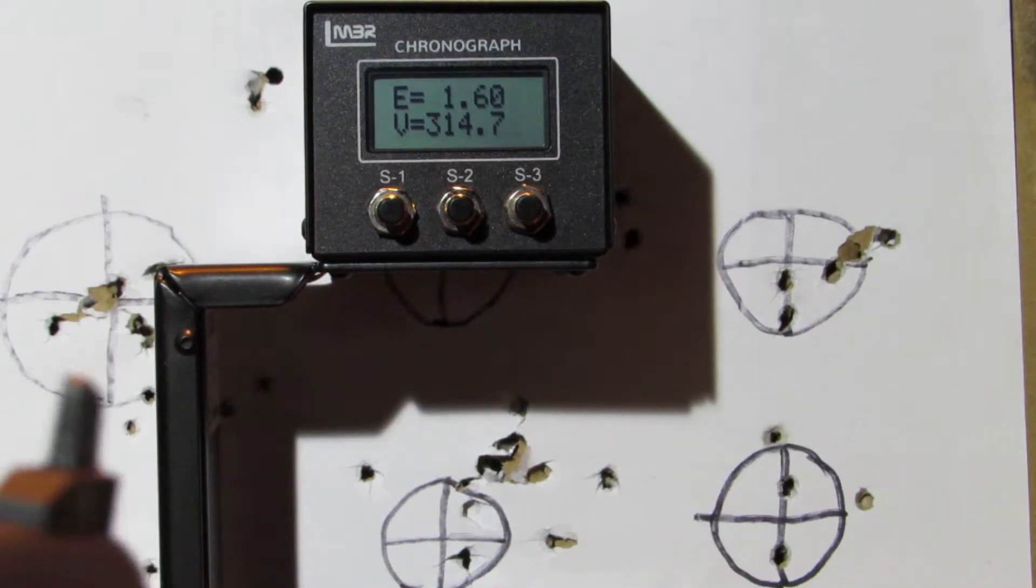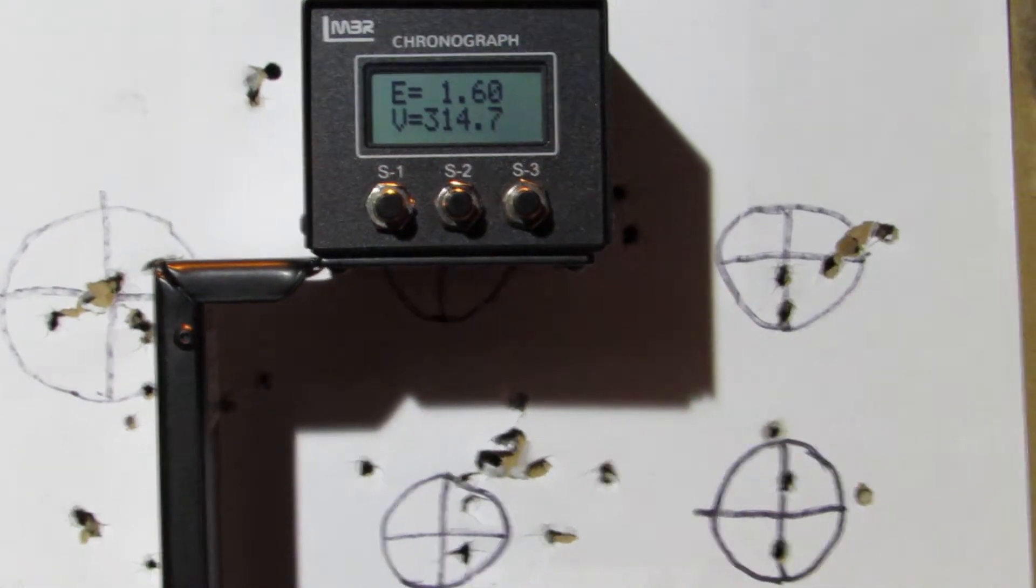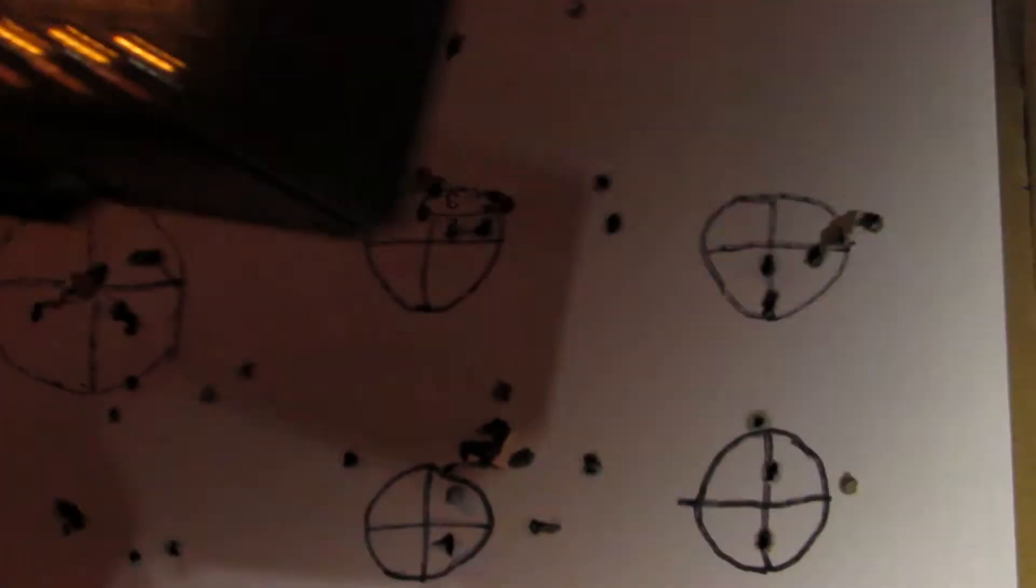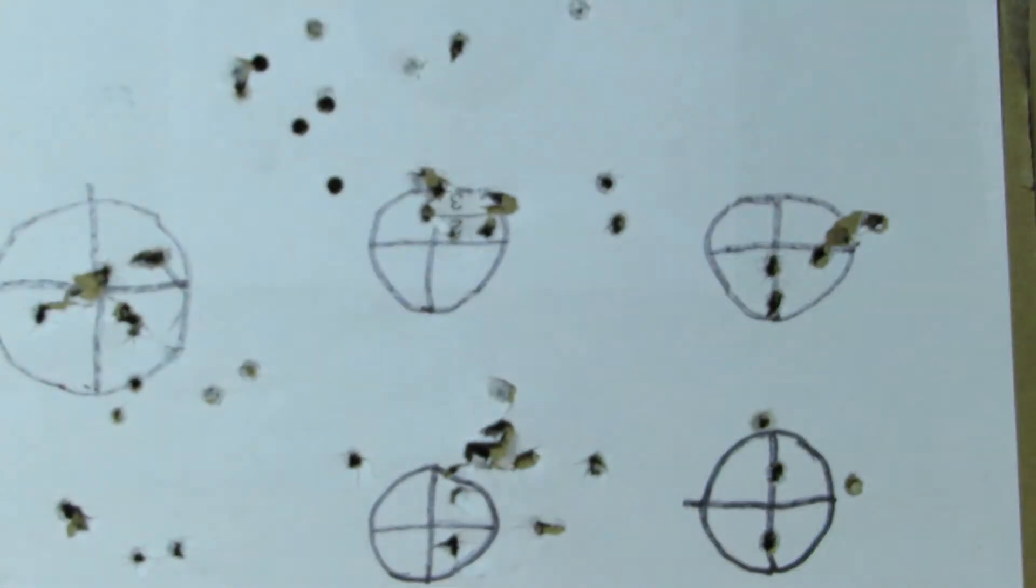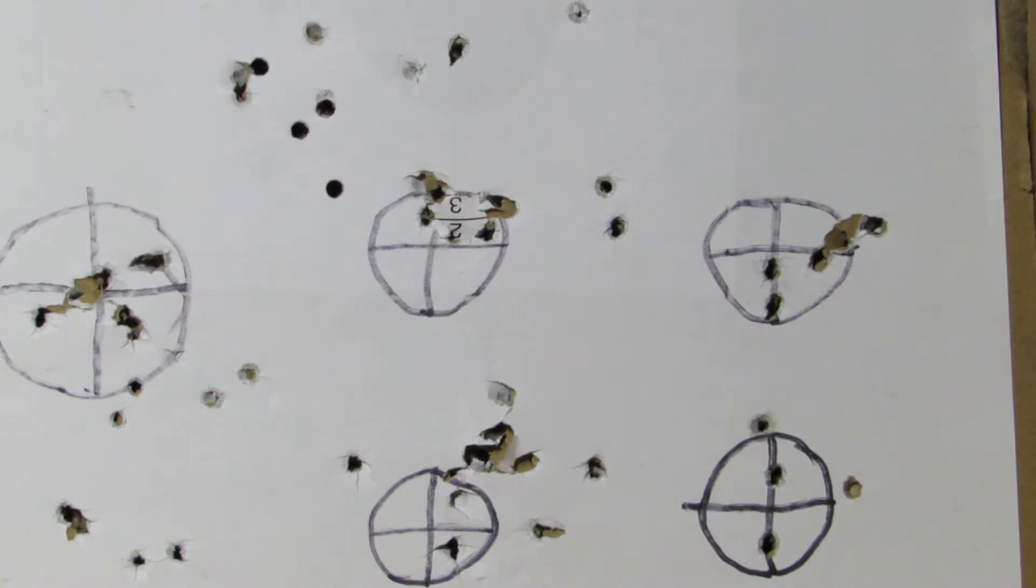OK, there we have it. I'll just give an average on the score. Average foot pound, 1.58. And that is with a 7.3 grain pellet.